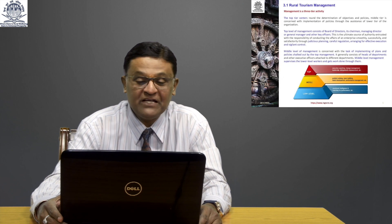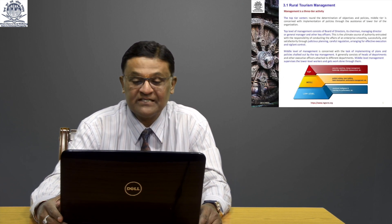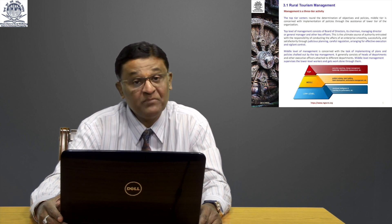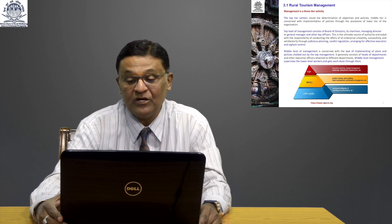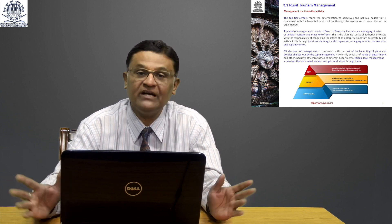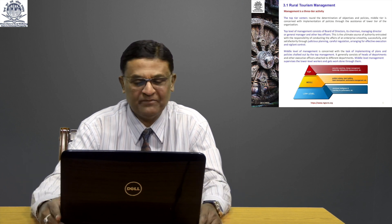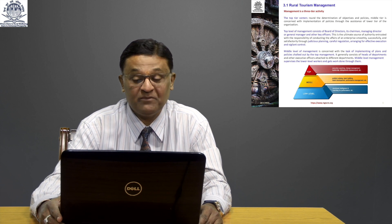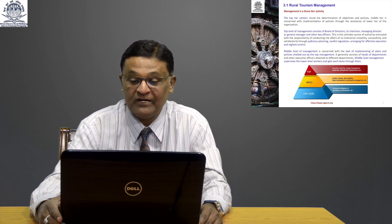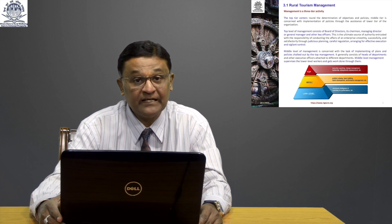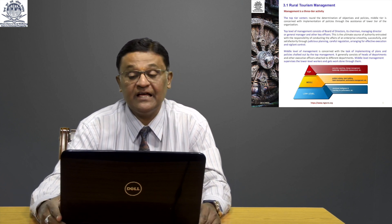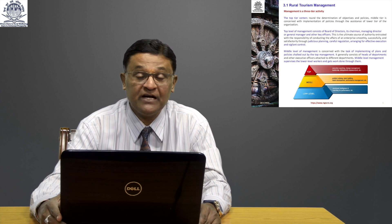Management is a three-tier activity. The top tier centers around determination of objectives and policies. The middle tier is concerned with implementation of those policies through the assistance of the lower tier. The top level management — board of directors, chairman, managing director, general manager — is the ultimate source of authority, responsible for judicious planning, careful regulation, arranging for effective execution, and vigilant control.